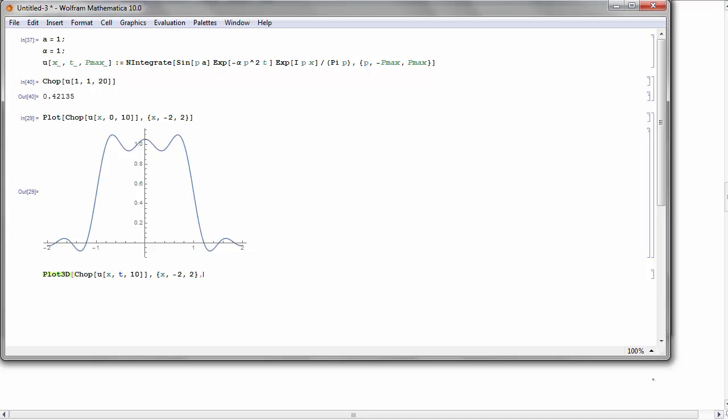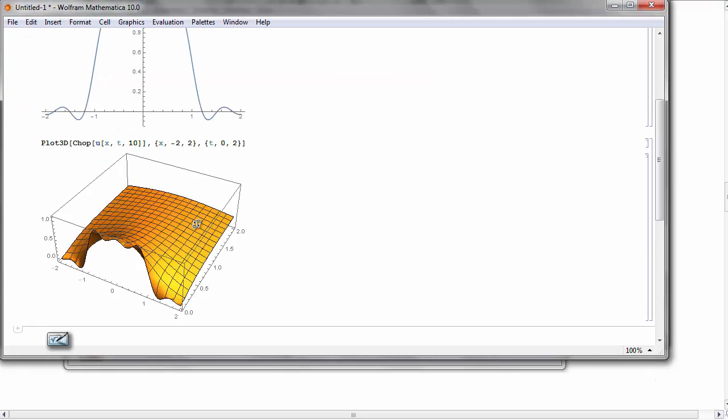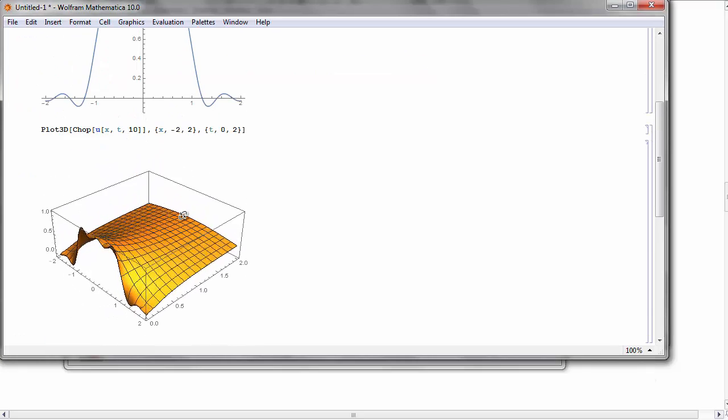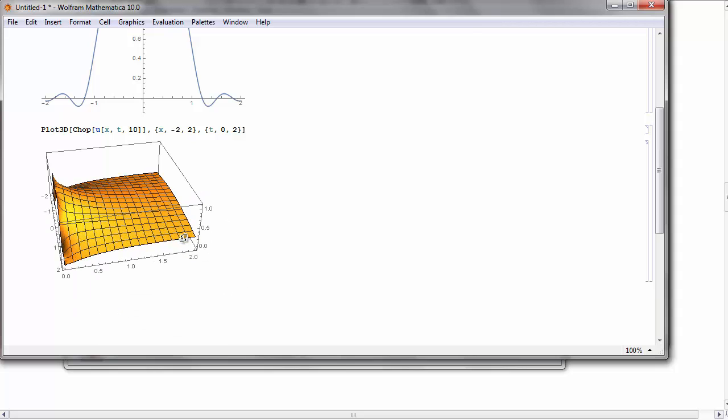Now let me do a 3D plot of the solution as a function of x and time. This takes a long time, so I'll just show you the result here. And so we see what you'd expect would happen, which is that the temperature decreases with time, so that the whole temperature of the bar eventually becomes zero.